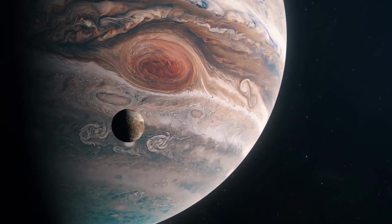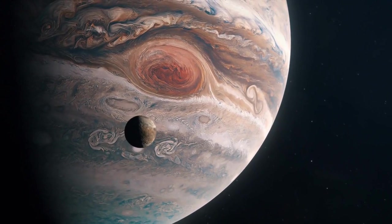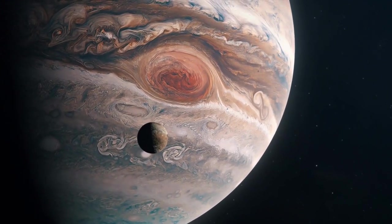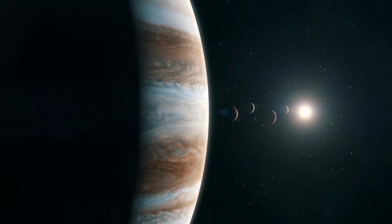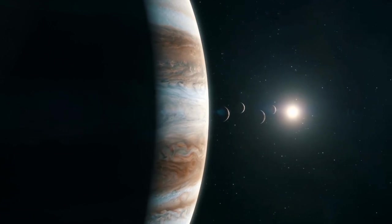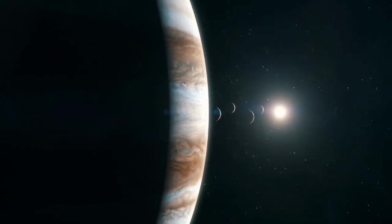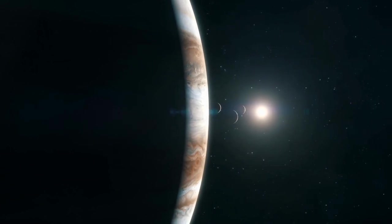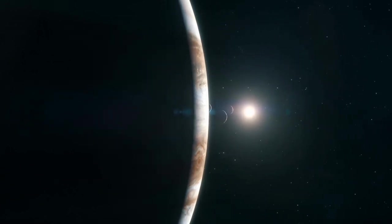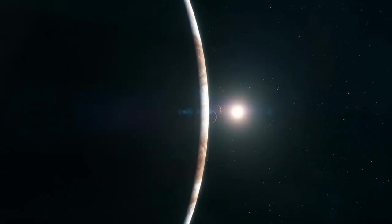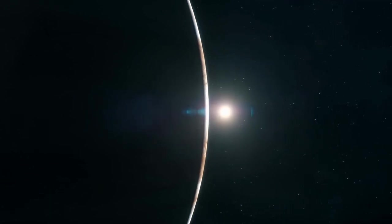Jupiter is an awe-inspiring gas giant, the fifth planet from the Sun and the largest in the solar system. Jupiter is called a failed star because it is made of the same elements as the Sun. But it is not massive enough to have the internal pressure and temperature necessary to cause hydrogen to fuse to helium that powers the Sun and most other stars.